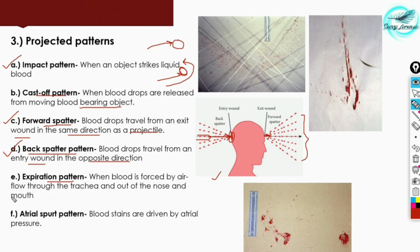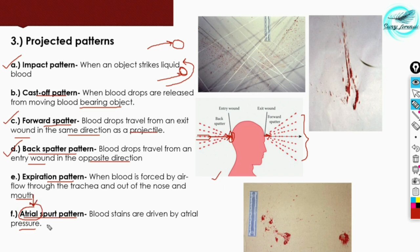The expiration pattern forms when blood is forced by airflow through the trachea and out of the nose and mouth. This kind of pattern can be seen in cases of poisoning or when blood is expelled through the mouth with vomit. The last is the arterial spurt pattern — blood stains driven by arterial pressure. The arterial force acts on the blood, producing arterial spurt patterns.